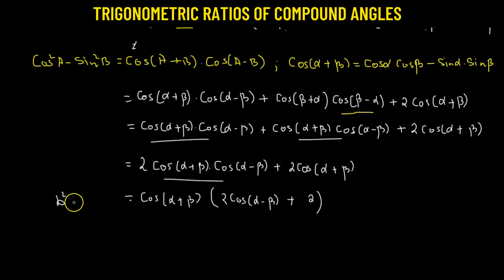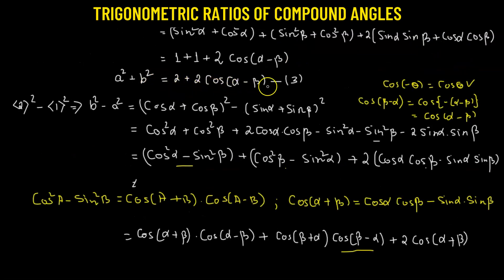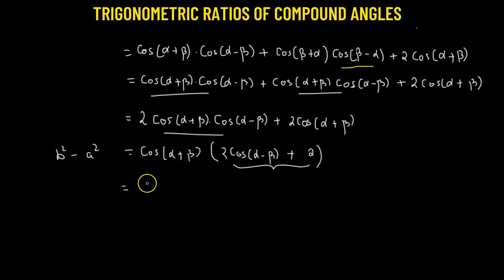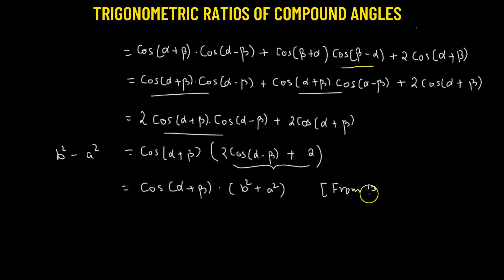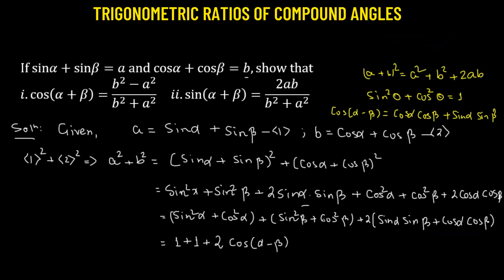So b² − a² = cos(α+β) · [2cos(α−β) + 2]. We can immediately replace [2 + 2cos(α−β)] with a² + b² from equation 3. That means b² − a² = cos(α+β) · (a² + b²), and therefore cos(α+β) = (b² − a²) / (b² + a²). This is exactly what we were asked to show. Hence proved. So cos(α+β) = (b² − a²) / (b² + a²).